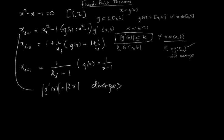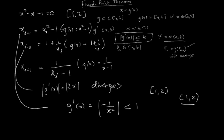For the second iteration, xᵢ₊₁ = 1 + 1/xᵢ, so g(x) = 1 + 1/x and g'(x) = -1/x². Looking at the interval (1, 2], the absolute value of -1/x² is clearly less than 1 for this range of values. So we are guaranteed convergence in this case — and indeed, as you may recall, this iteration does converge.